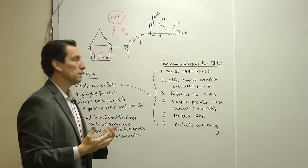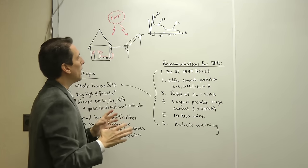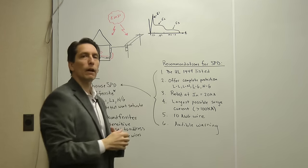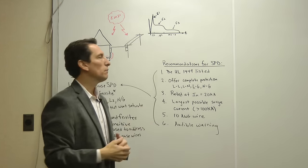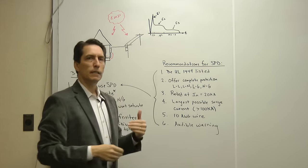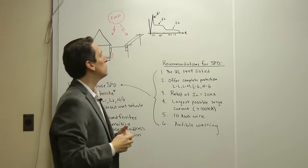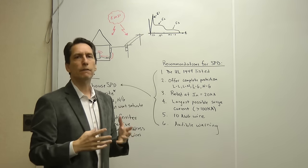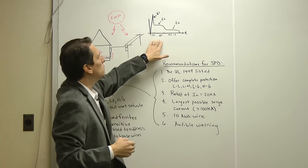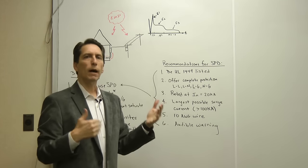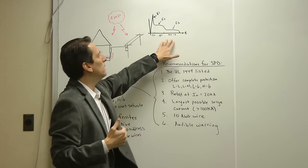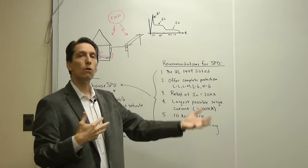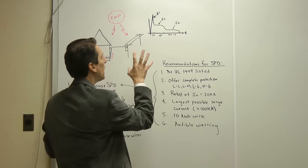If you look at the actual waveform generated by an EMP, it has three different components called E1, E2, and E3. The E1 event is the initial, really fast surge of energy — it occurs in the nanosecond time frame, which is very, very fast. The E2 event is spread out over microseconds of time, and then the E3 event is over milliseconds or even seconds or minutes, so it's a very long duration type of event.